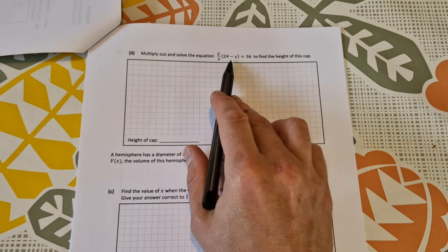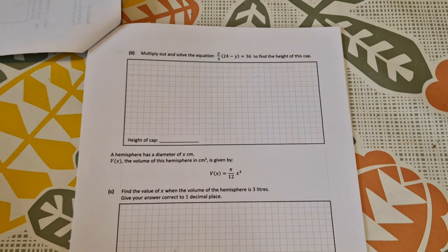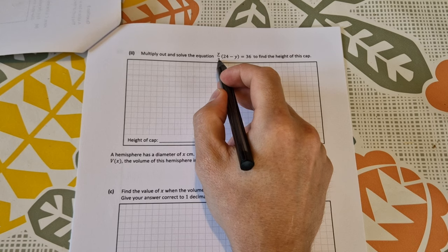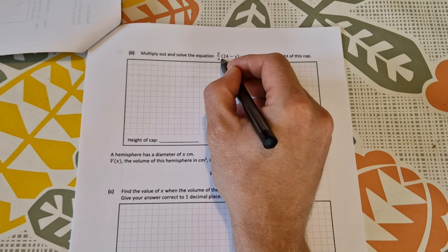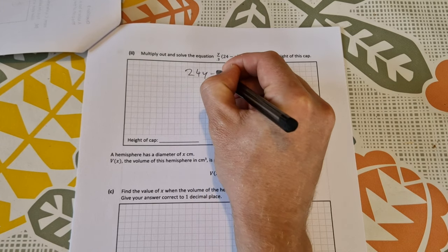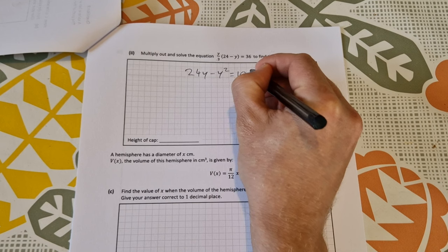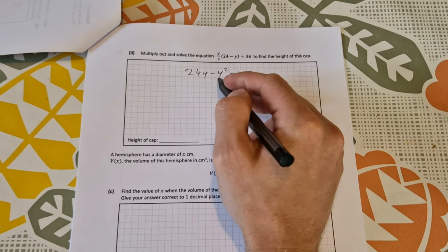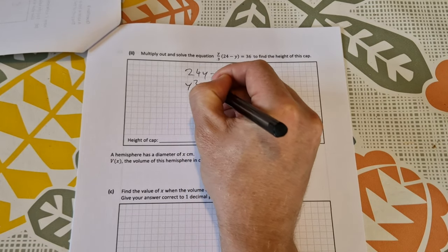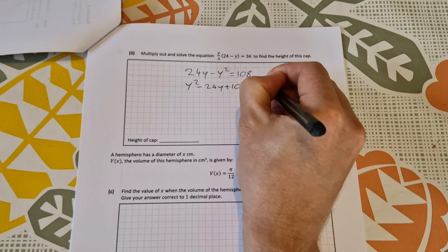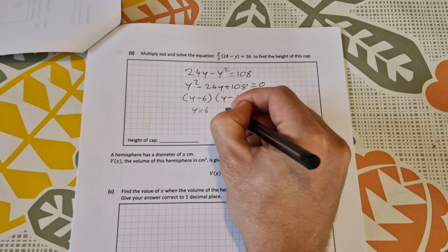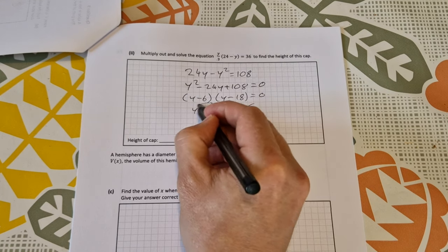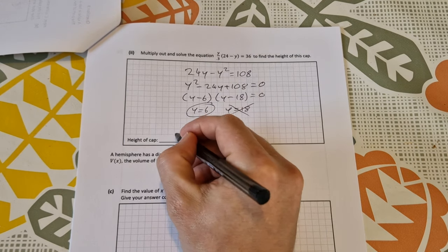Part 2. Multiply out and solve the equation to find the height of this cap. So I just need to multiply out the brackets and solve for y. I can start by multiplying everything by 3 to get rid of the fraction. So multiplying by 3y there I get 24y minus y squared. And on this side 36 multiplied by 3 is 108. So you get a quadratic equation. I'm just going to get everything to the one side and have my leading coefficient positive. So that'd be y squared minus 24y plus 108 is equal to 0. Factors of that are y minus 6 and y minus 18. So that gives me two values of y equal to 6 and y equal to 18. We can't accept y equal to 18 because the radius has to be less than 8. So the height of the cap is 6.